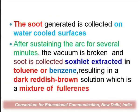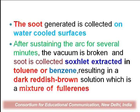The soot generated is collected on water-cooled surfaces or the cathode. After sustaining the arc for several minutes, the vacuum is broken and the soot is collected, then extracted using a solvent such as toluene or benzene. This forms a dark reddish-brown solution which is a mixture of most fullerenes — C60, C70, C80, and other molecules — which is further purified to get pure C60 and C70.